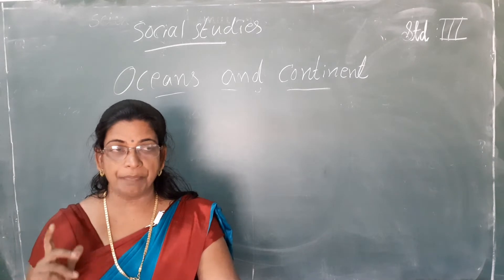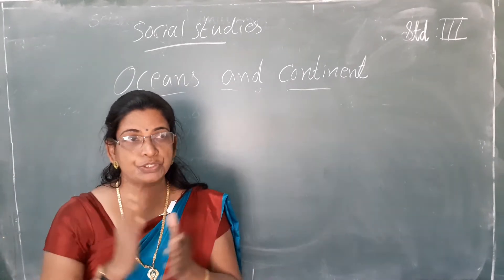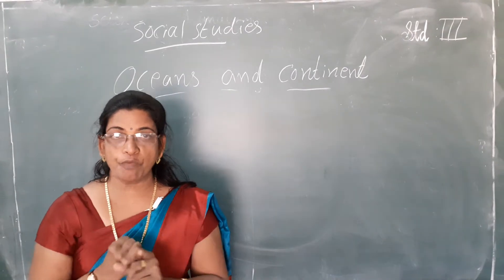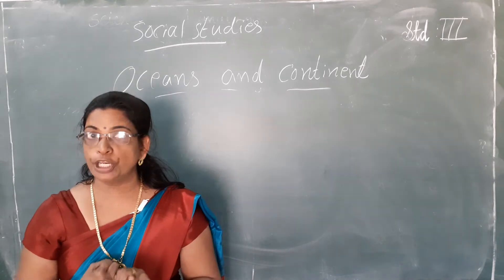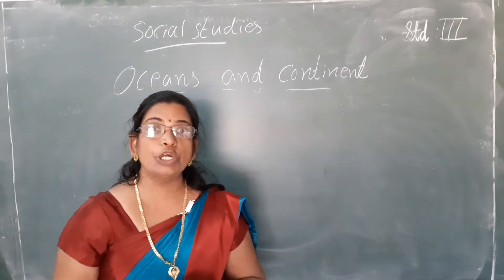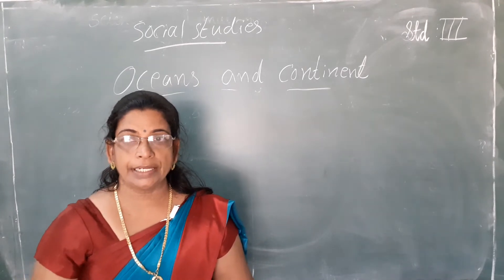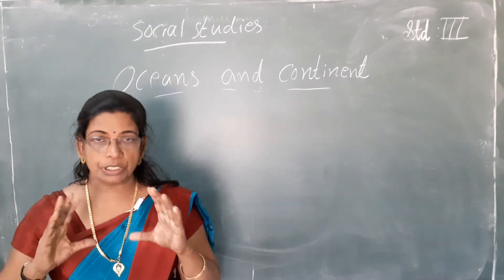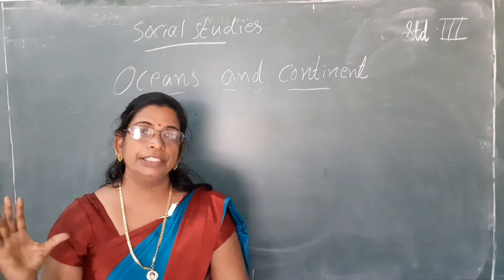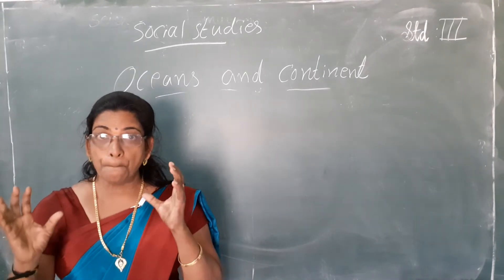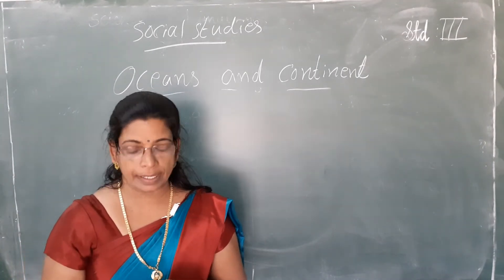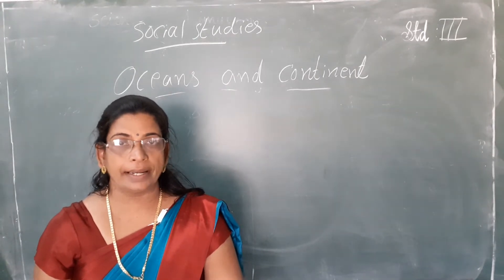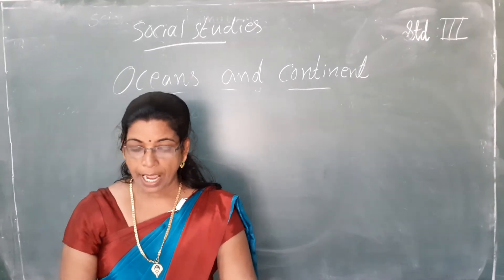Many maps of many countries — India's map, world map, America's map — so many maps together we will get like one book. A book of maps is called an atlas. So you know what is a globe, what is a map, and now what is an atlas: a book of maps is called an atlas.